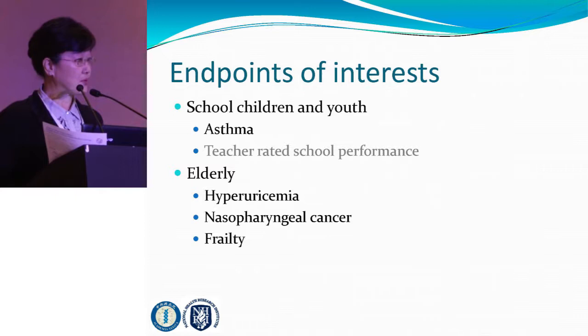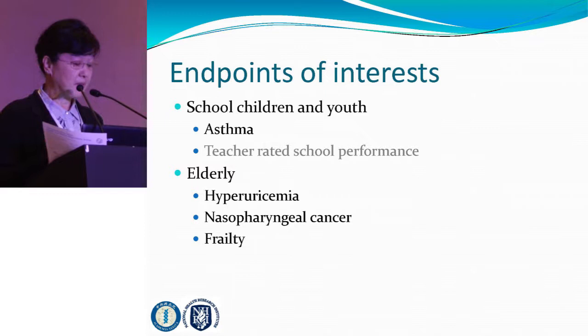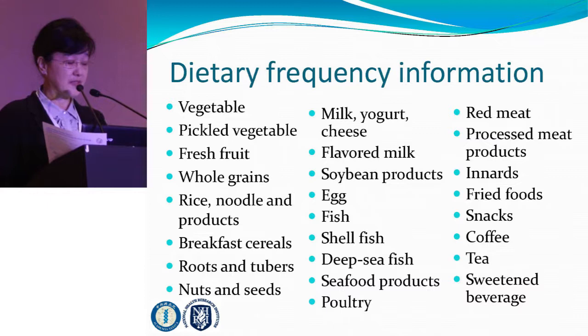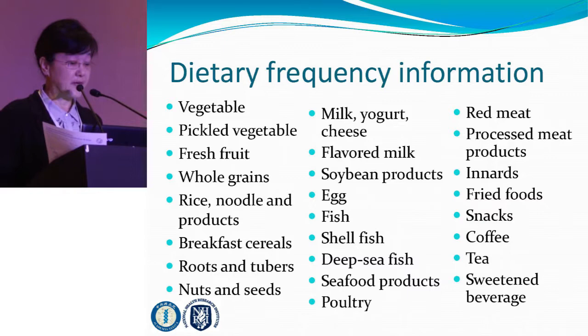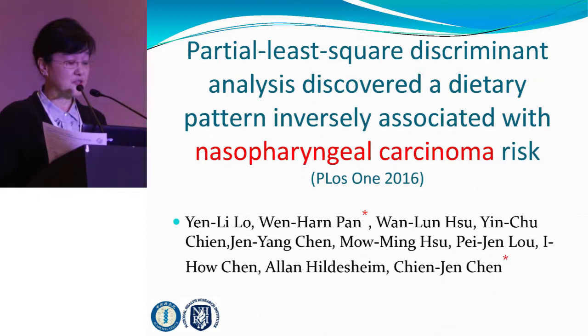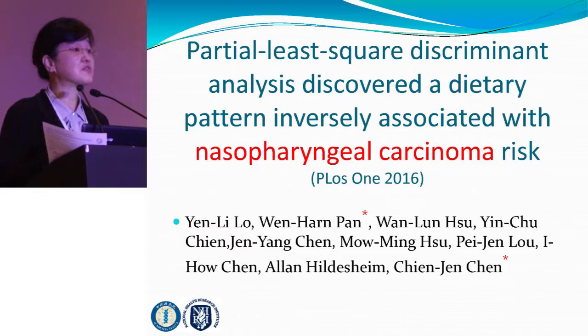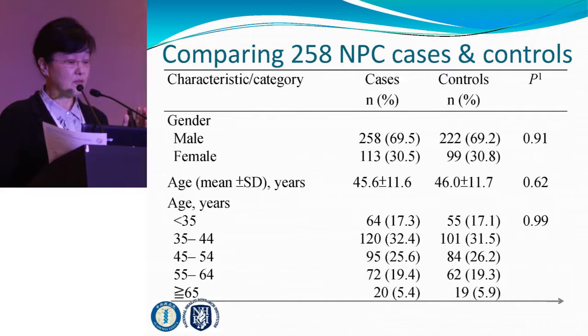I want to show you some data about different endpoints — not just hypertension and diabetes, but also conditions like asthma, hyperuricemia, nasopharyngeal cancer, and frailty. The food frequency information is categorized properly so we can derive good information. The first study I'd like to talk about is nasopharyngeal cancer, published last year. This is a case-control study. We used partial least squares discriminant analysis because of the categorical variable — cancer versus no cancer. We studied more than 258 patients and an equal number of controls.